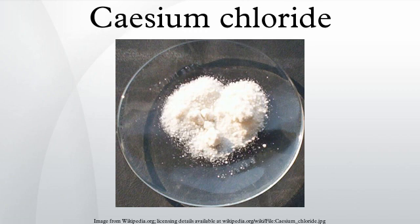Cesium chloride, or caesium chloride, is the inorganic compound with the formula CsCl. This colorless solid is an important source of cesium ions in a variety of applications. Its crystal structure forms a major structural type where each cesium ion is coordinated by 8 chlorine ions. Cesium chloride crystals are thermally stable, but easily dissolve in water and concentrated hydrochloric acid, and therefore gradually disintegrate in ambient conditions due to moisture.